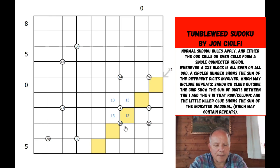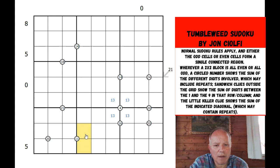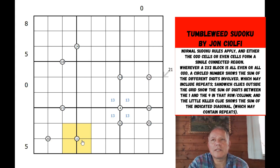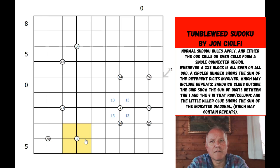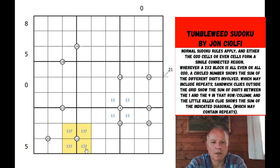Any time we get an odd number clue in a circle, it's got to be for an odd box because evens could never add up to an odd number. So the 11 circle must have three odd numbers — they've got to be one, three, and seven, which add up to 11. Given it adds only one instance of each digit, everything in this two-by-two block has to be from one, three, and seven. So we get a one-three-seven triple in the box.